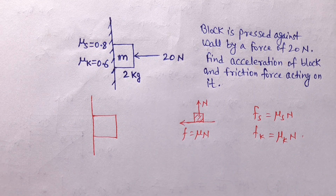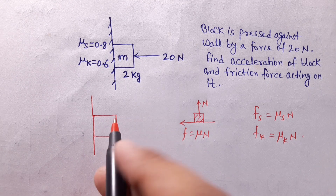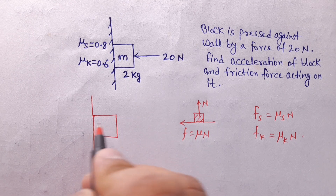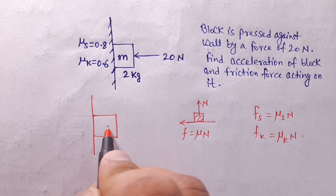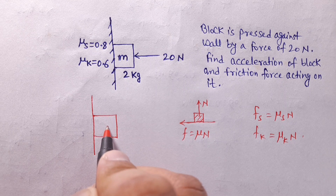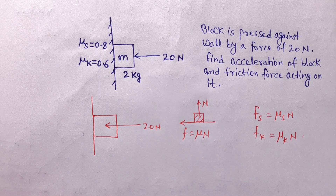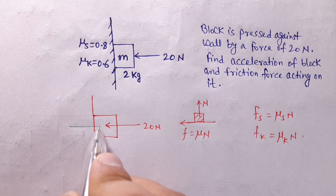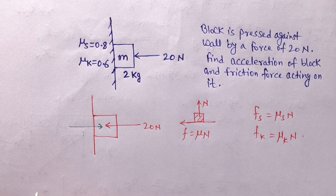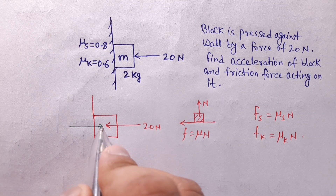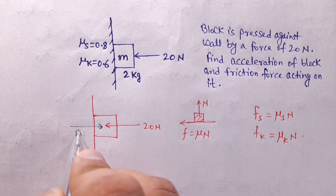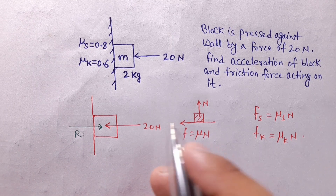Here we have a 20 Newton force on the body acting in one direction, so the normal reaction R acts in the reverse direction. Weight mg acts downward.